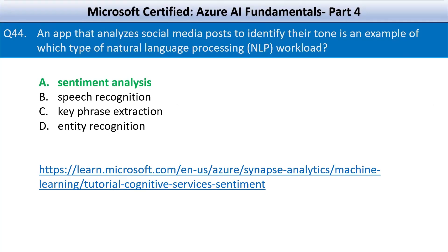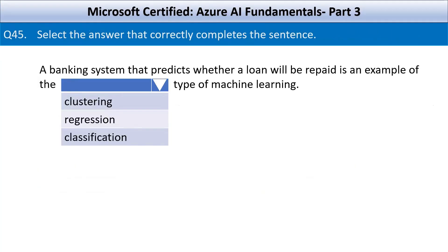Speech recognition converts spoken language into text. Key phrase extraction identifies the main points or topics in the text. Entity recognition detects names, places, dates, etc. in text.